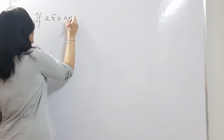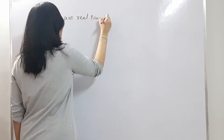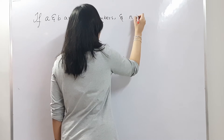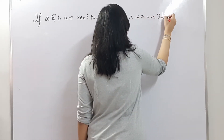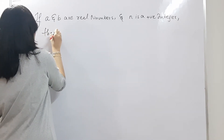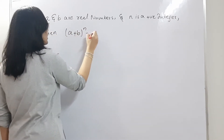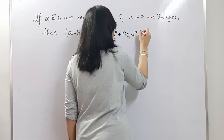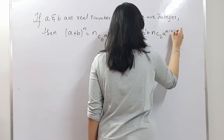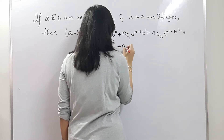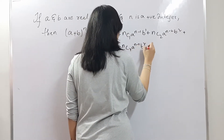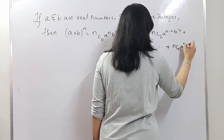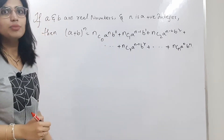So what is binomial theorem? If a and b are real numbers and n is a positive integer, then (a + b)^n can be written as: nC0 · a^n · b^0 + nC1 · a^(n-1) · b^1 + nC2 · a^(n-2) · b^2 + ... + nCr · a^(n-r) · b^r + ... + nCn · a^0 · b^n. This is the binomial theorem.